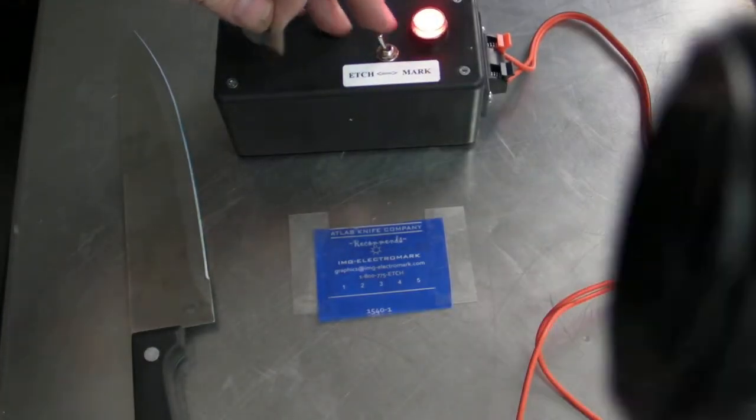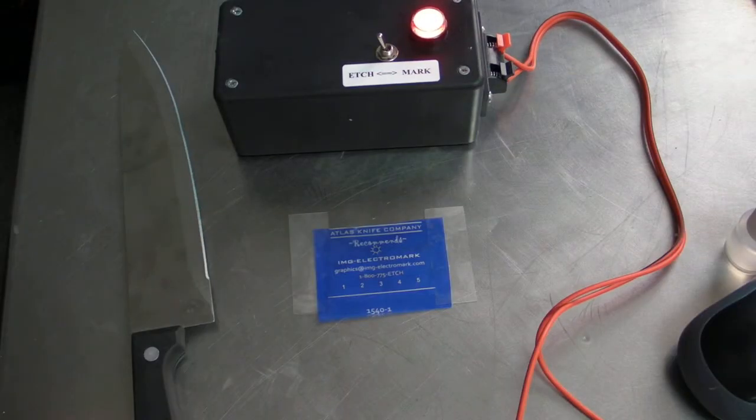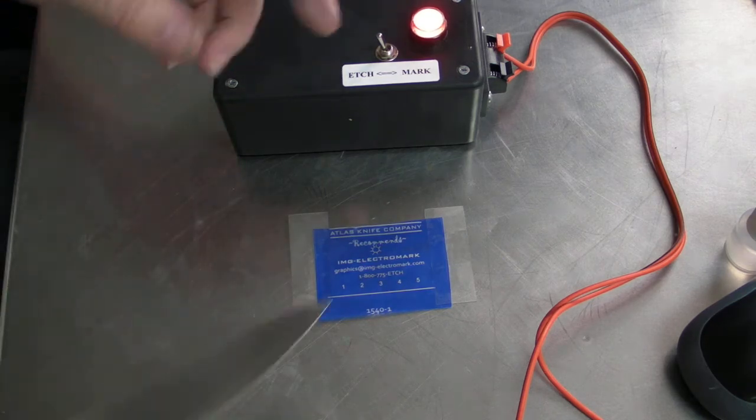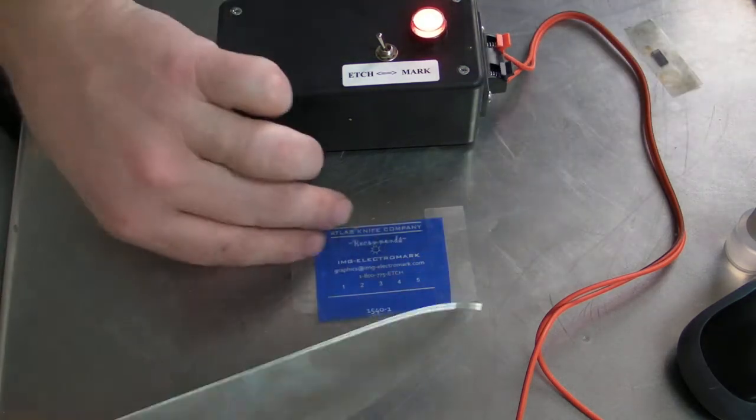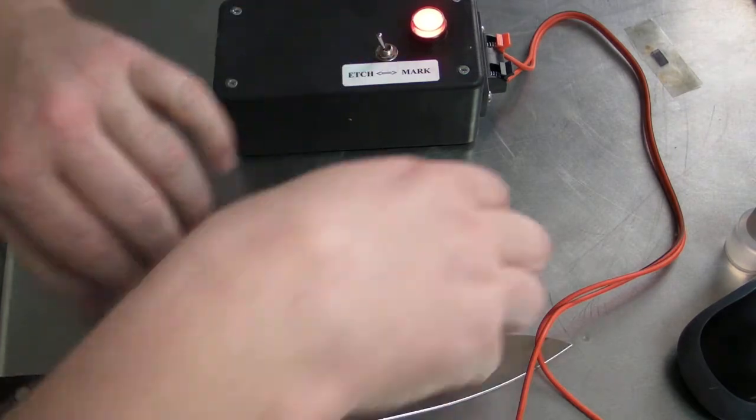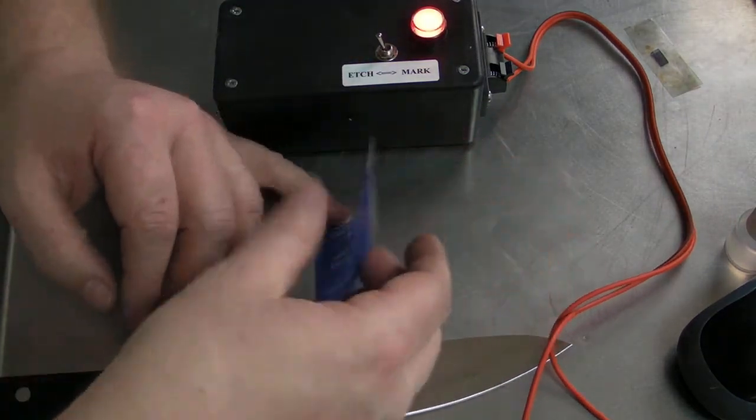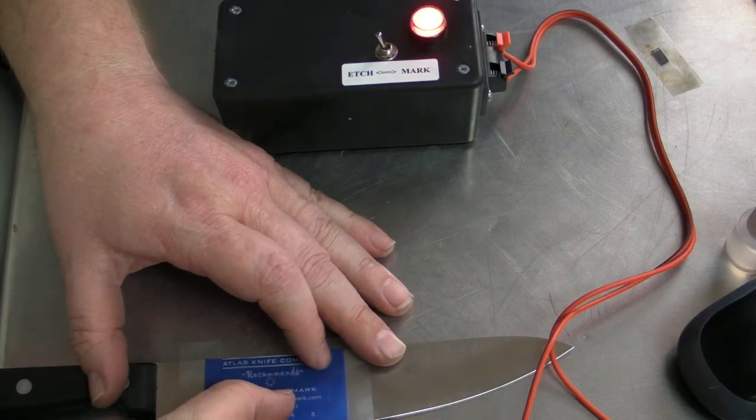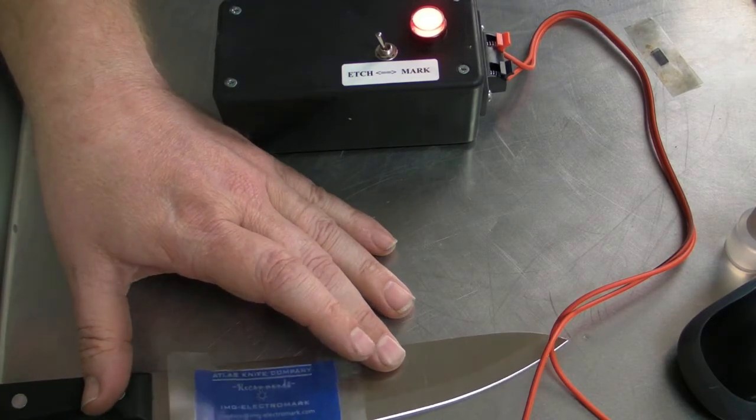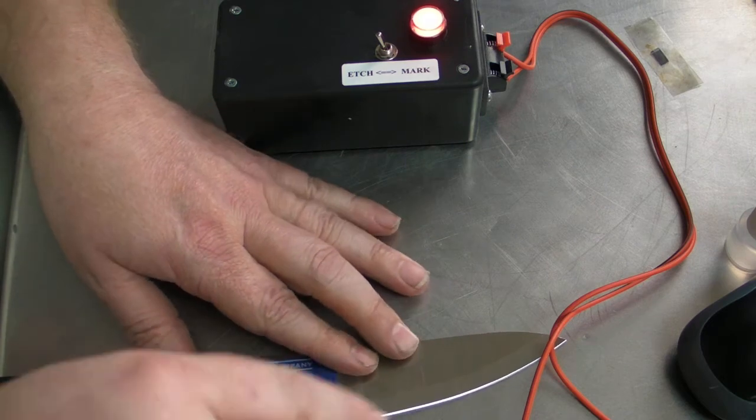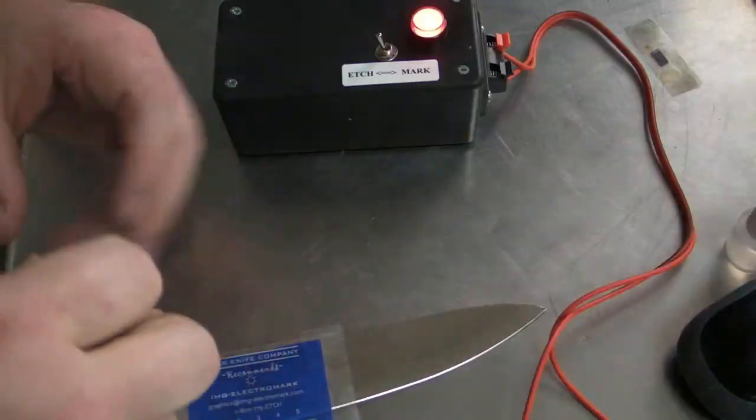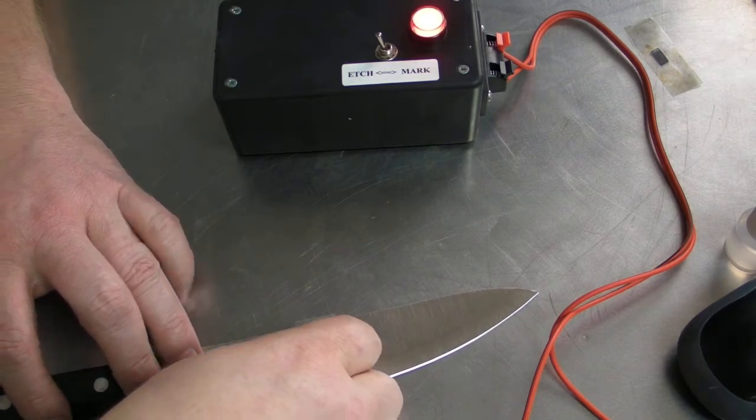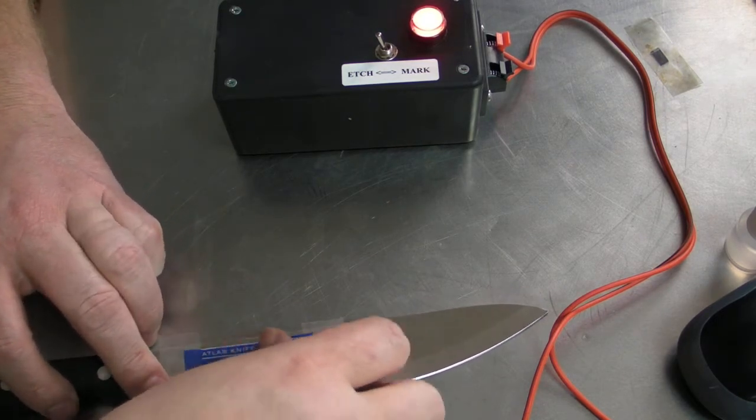We're going to set our Etcher to Etch. We're going to tape our stencil to the knife. Just a couple pieces of tape there. One more piece of tape to block that off.